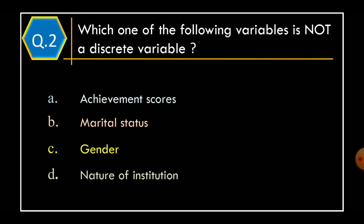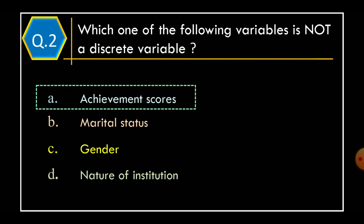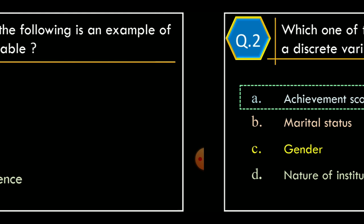Question 2: which one of the following variables is not a discrete variable? Option A: achievement scores? Option B: marital status? Option C: gender? Option D: nature of institution? The correct answer is Option A: achievement scores.